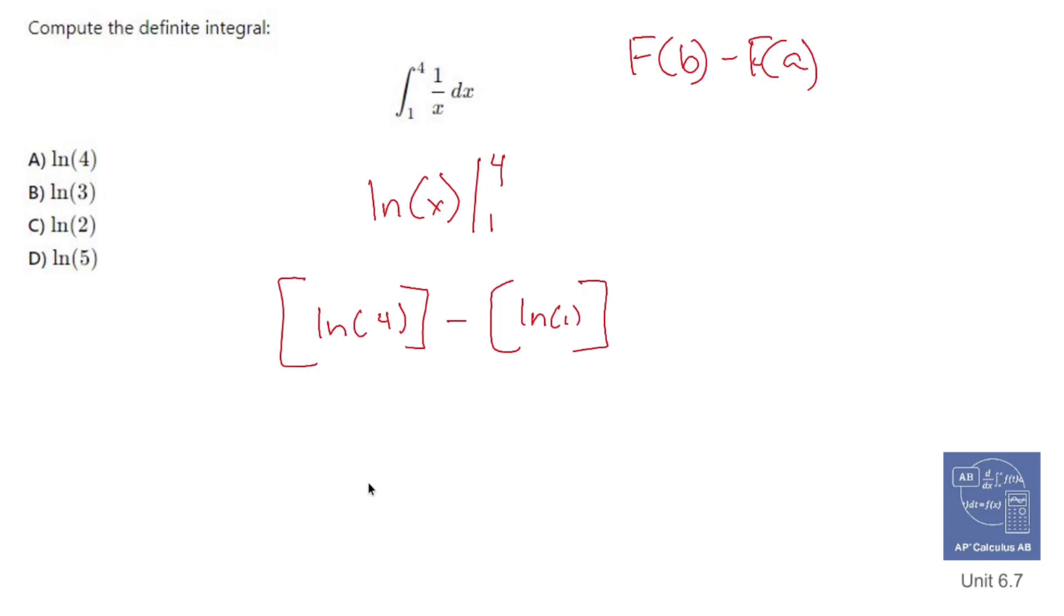Fun fact, the ln of 1 is 0. So that just leaves you with the ln of 4, and that's going to give me A. Fun stuff.